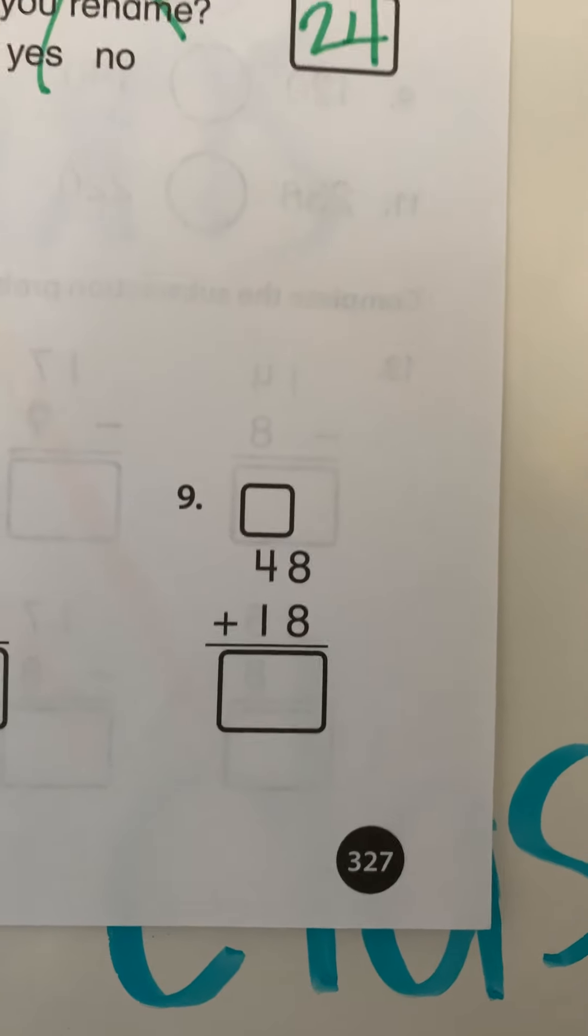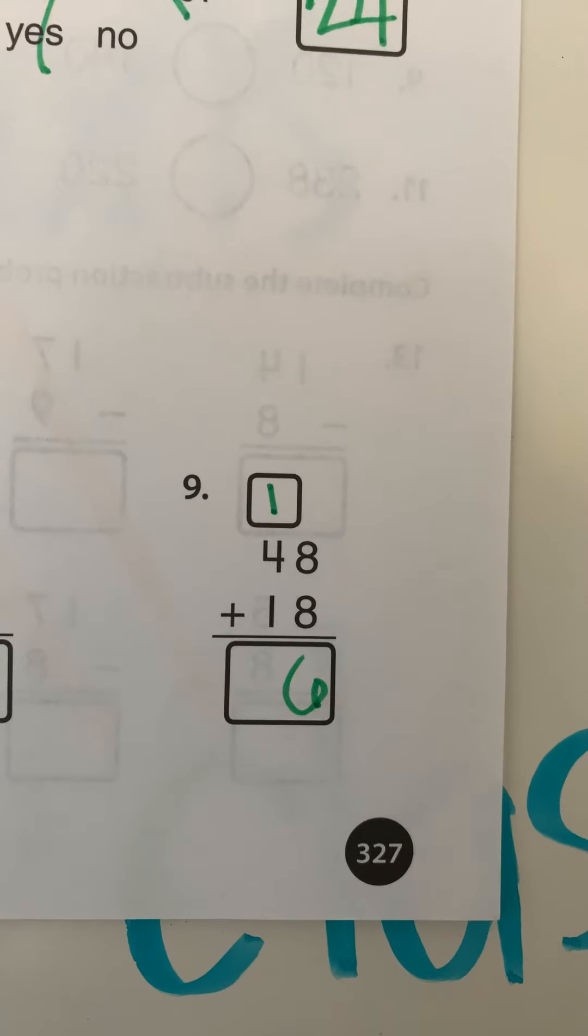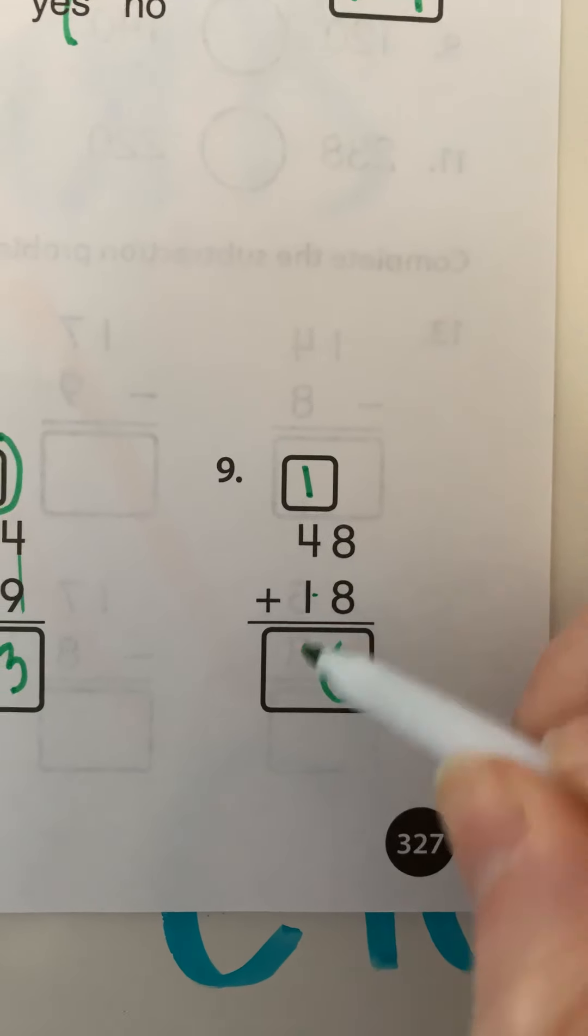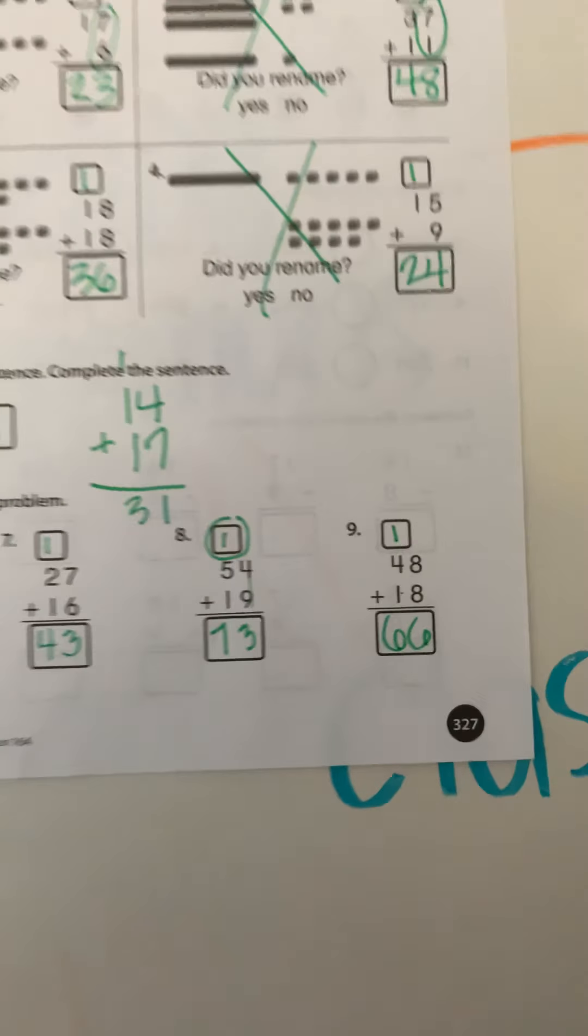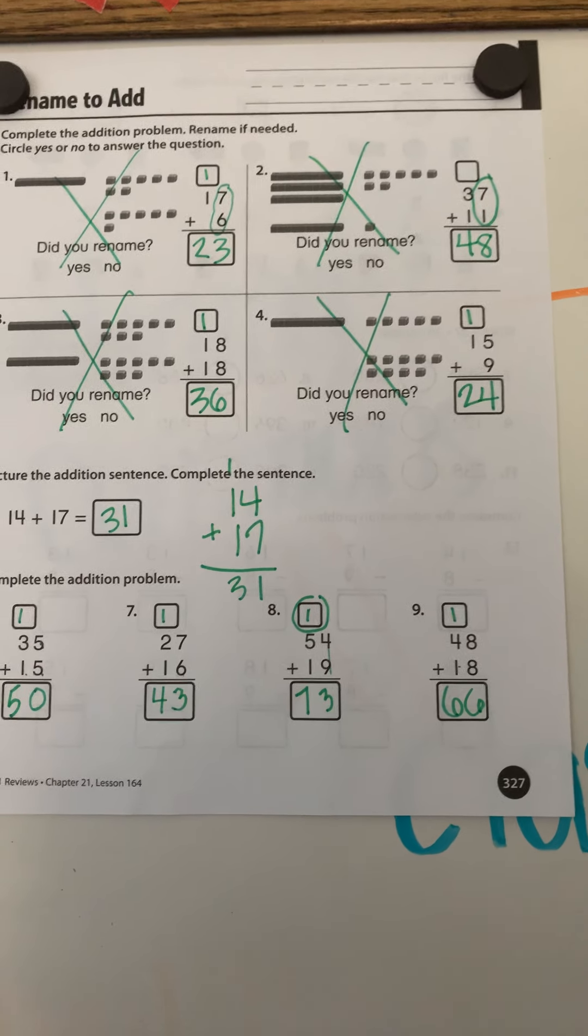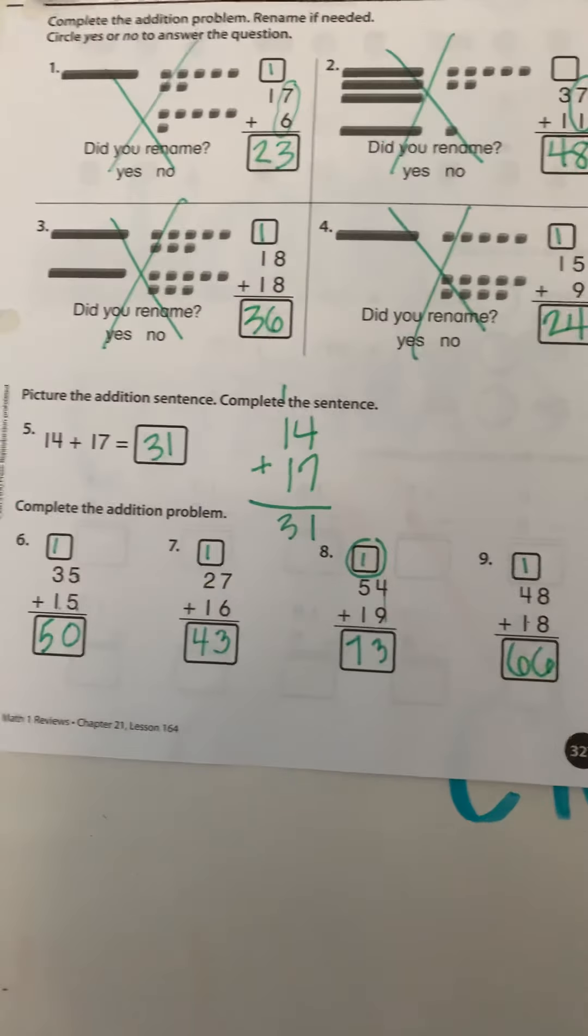Okay. And then our last problem. Eight plus eight is 16. There's my one. There's my six for 16. Four plus one plus one. Four plus one is five. Plus one more is six. 66. Okay. That's how we're going to do this sheet. Okay. We're just going to carry and we're going to add. We are not going to worry with the pictures.